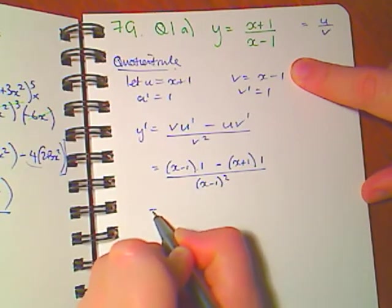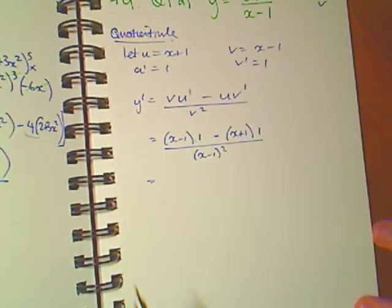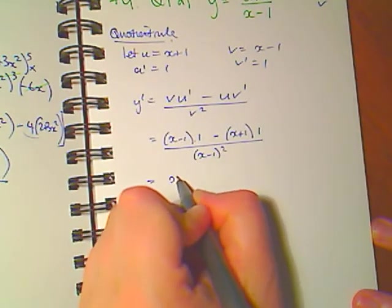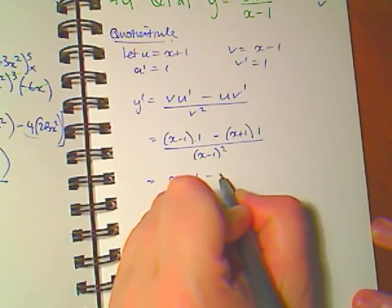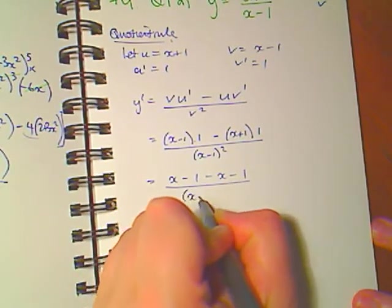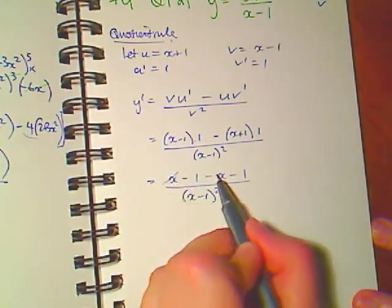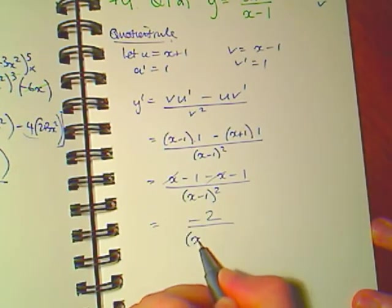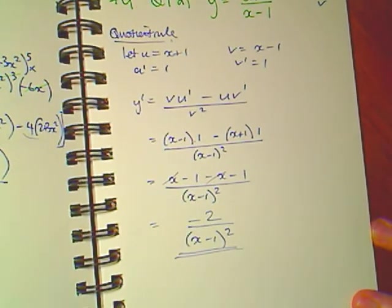Expand and simplify that top line: x minus 1 minus x minus 1. x minus x, minus 1 minus 1. That's our derivative.